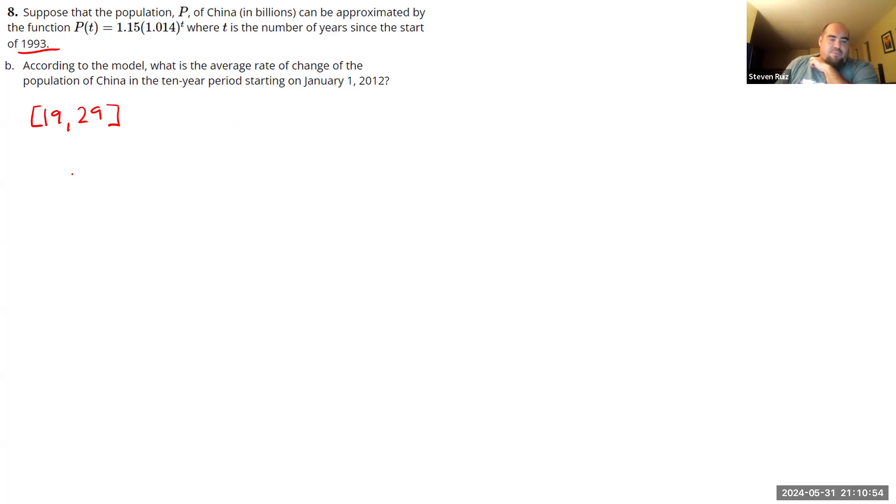So we want average rate of change. How do we find average rate of change? So delta P, so change in population over change in time. I want to find P of 29 minus P of 19 over 29 minus 19. So how do I find P of 29? That's going to come from our formula, 1.15 times 1.014 to the 29th. And P of 19 is going to come from 1.15 times 1.014 to the 19th. So let's calculate each of these.